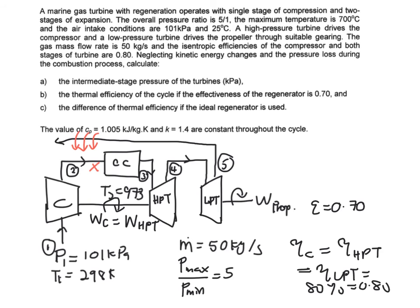And lastly you will be asked to find the difference of thermal efficiency if the ideal regenerator is used. So basically what does it mean here is you need to find out what if this regenerator effectiveness over here is not 0.70 but it is ideal. Meaning that in other words it is about 100 percent.